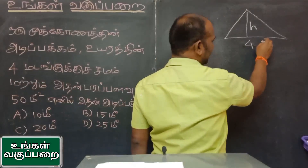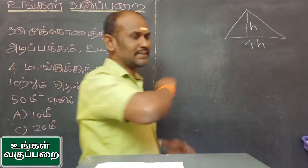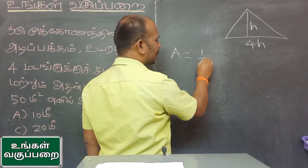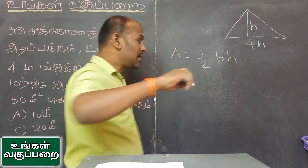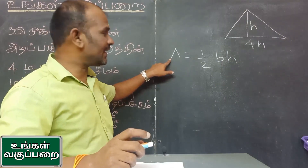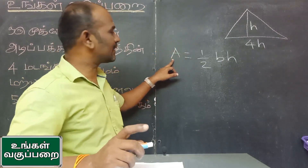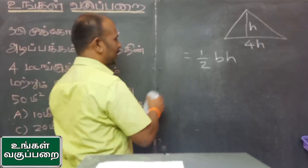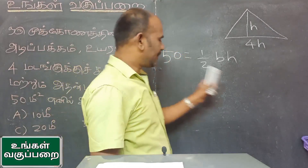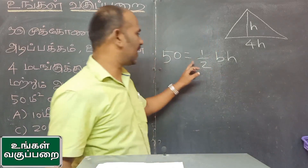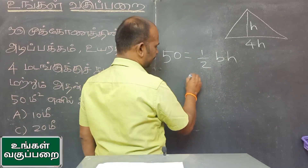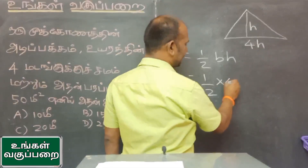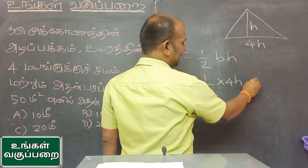We can say 4h, okay. We can define a equal to half bh — a equal to half bh. And if the area is 50 m², then we say a equal to half bh. b equals 4h, so we substitute b as 4h into h.